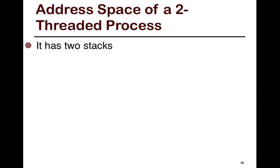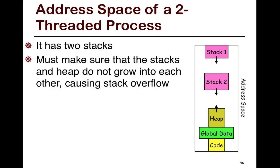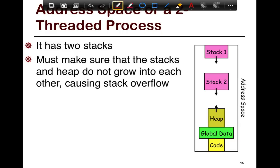In a two-threaded process, there are two stacks, both growing downward. You must ensure the stacks and the heap do not grow into each other. Virtual memory ensures stacks from different processes don't clobber each other, but you also need to ensure that two threads within the same process don't clobber each other's stacks. The OS sets up boundaries, and on every stack growth operation you check whether it has hit the boundary.